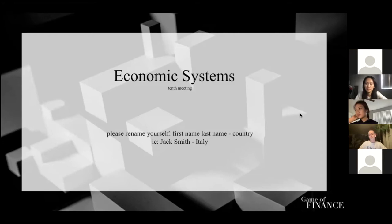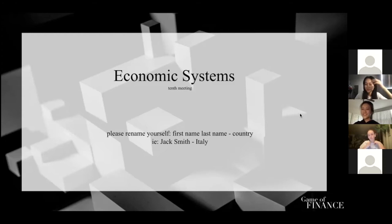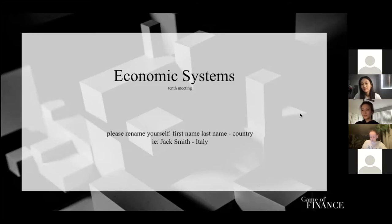Jennifer, go ahead. The seven principles — the first one was scarcity forces trade-offs. The third one is thinking at the margin. The fourth one is incentives sway decisions. The fifth one is trade is good. The sixth one is there is no trade without a market. The seventh one is that there are consequences. Going back to the second one — cost versus benefits. That's correct.